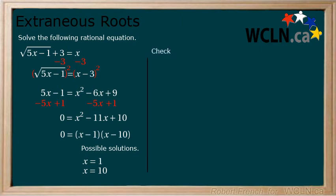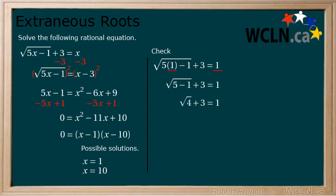Now we're going to check both. Replace x equals 1 back into the original equation. 5 multiplied by 1 equals 5. Subtract 1 to get 4. The square root of 4 is... the square root of 49 is 7. 7 plus 3 equals 10. 5 does not equal 1. Therefore, x equals 1 is an extraneous root.